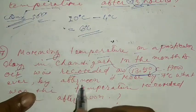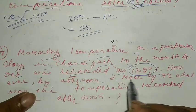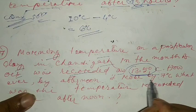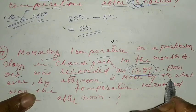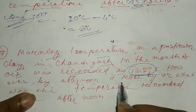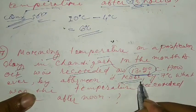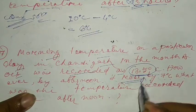However, by afternoon it rose by 7 degrees Celsius. Rose means increase.